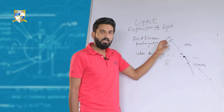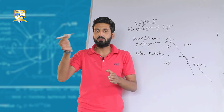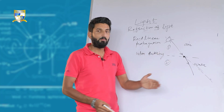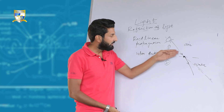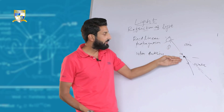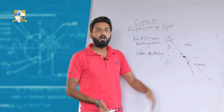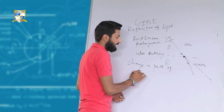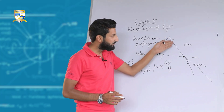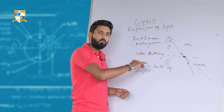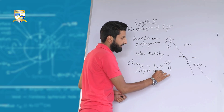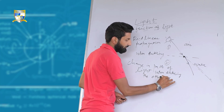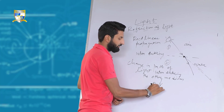Once light travels in a particular medium, it would have a straight path. But once light changes its medium, upon entering the other medium, it would change its path. That change in path of light — the straight path it was following when in a particular medium — upon entering the other medium, is called refraction of light.